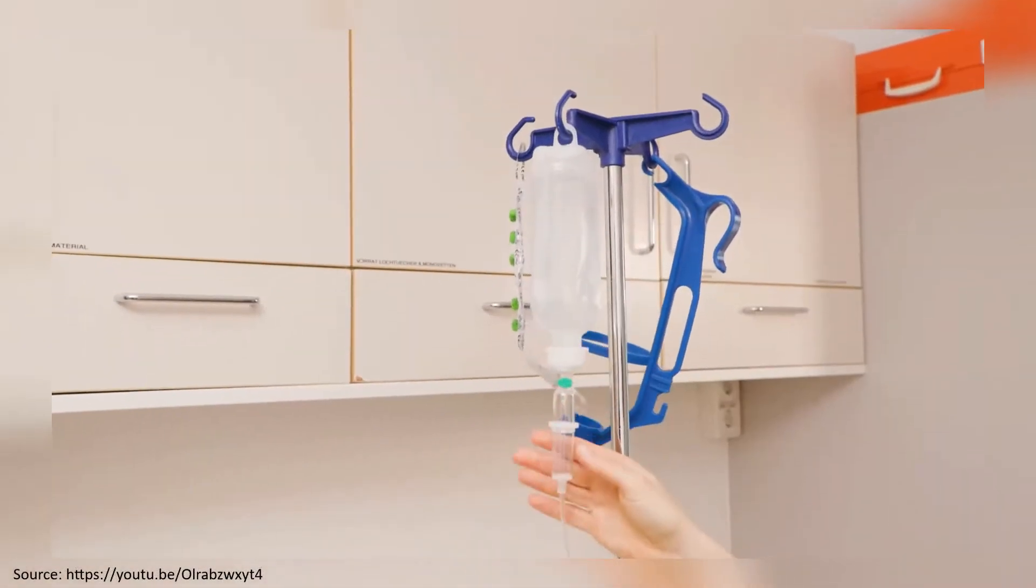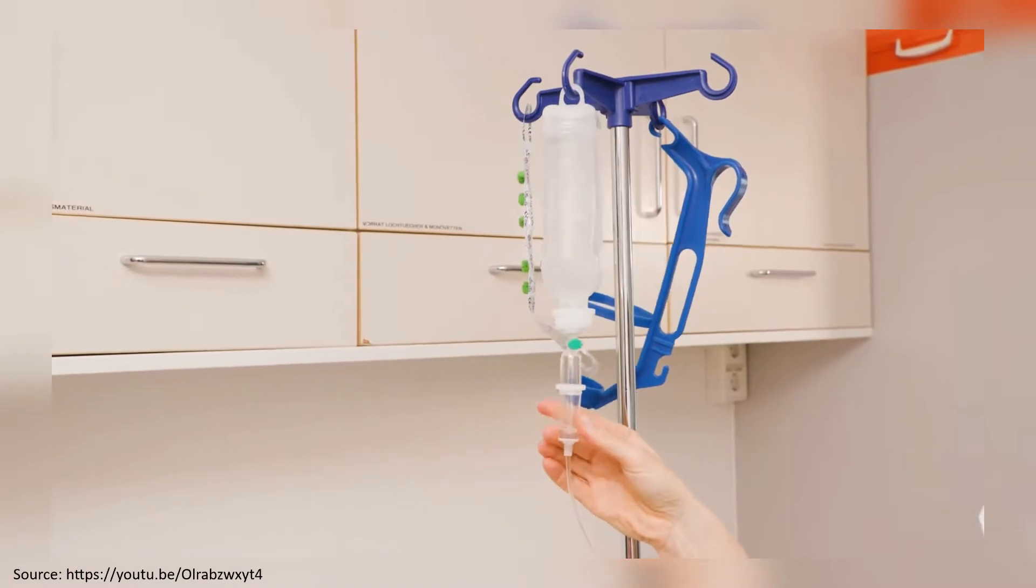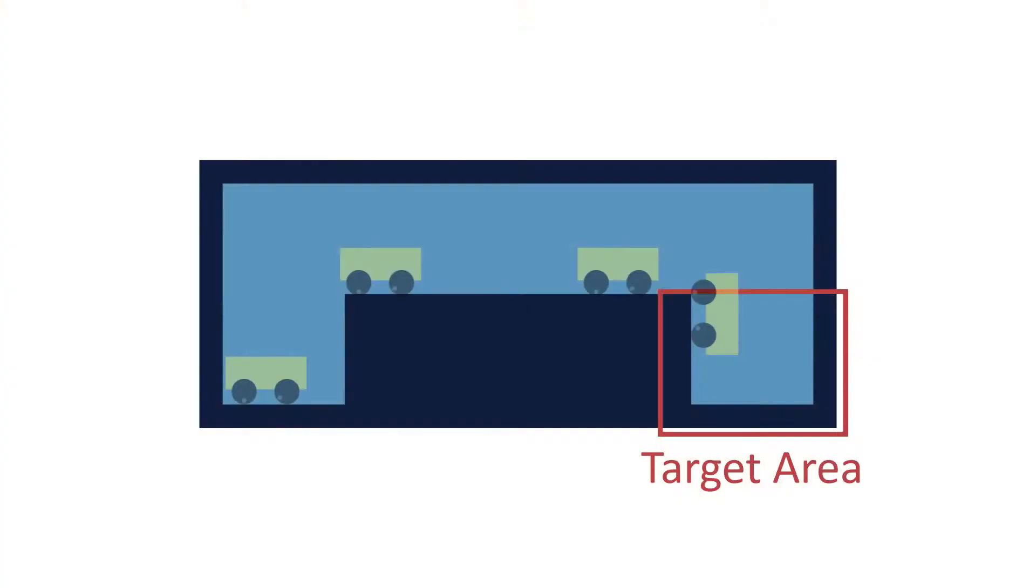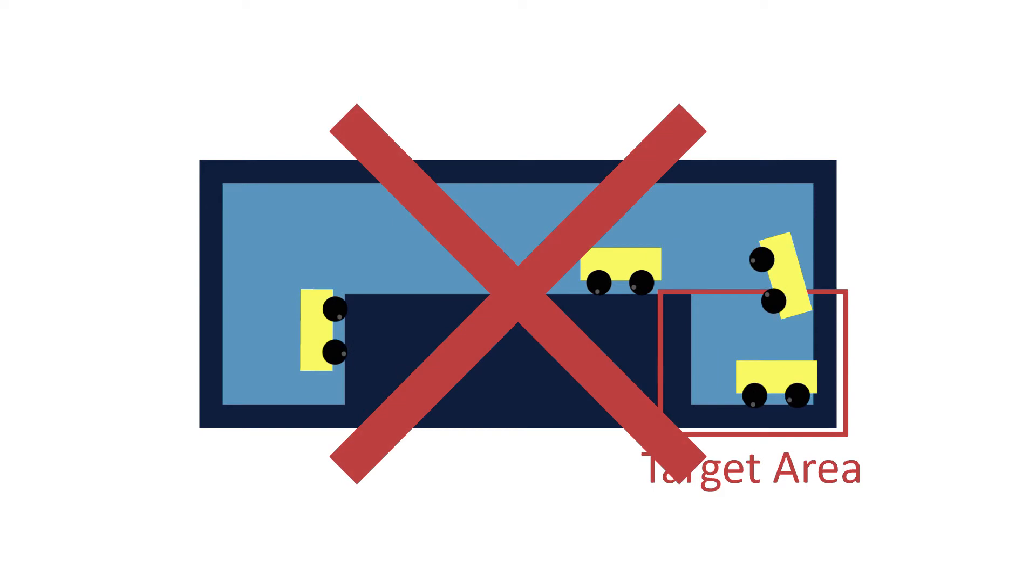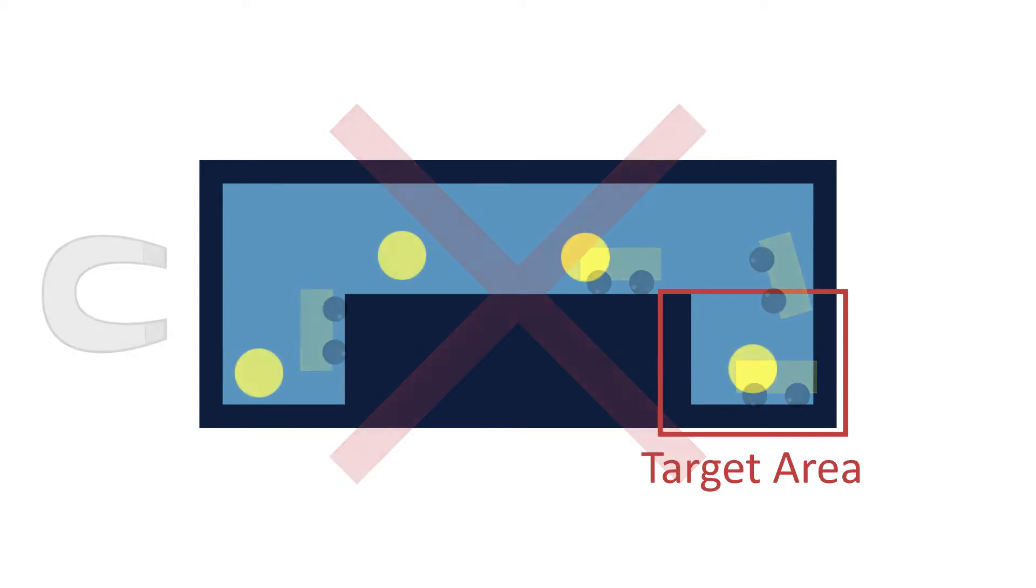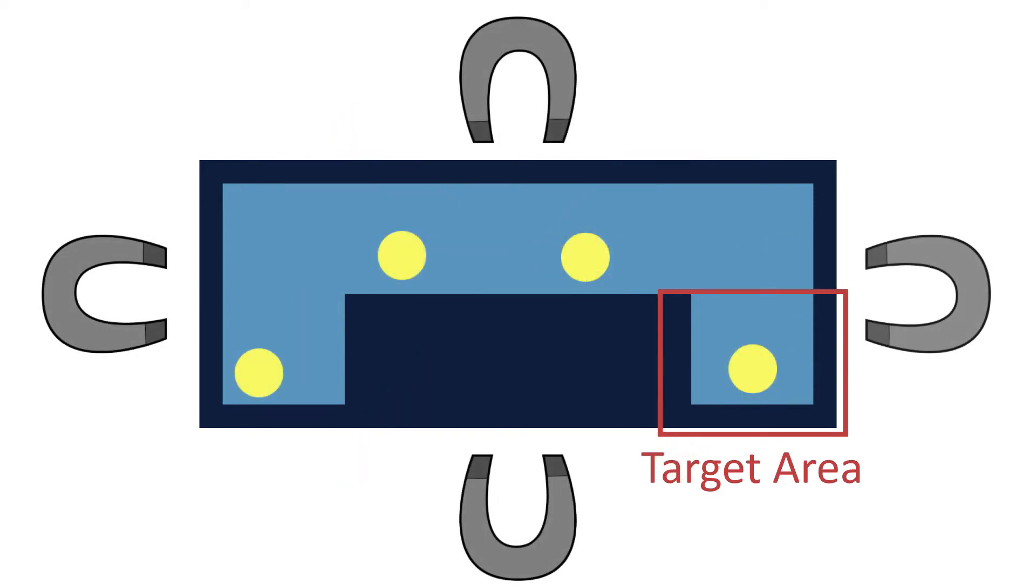For example, many cancers could be treated by targeted delivery of chemotherapy. The particles used are mechanically passive and cannot move autonomously. Instead, they are often controlled by an external global force that acts uniformly on all particles.